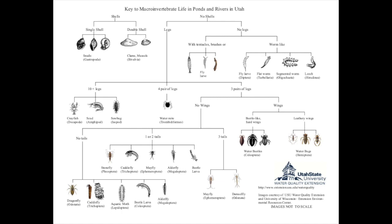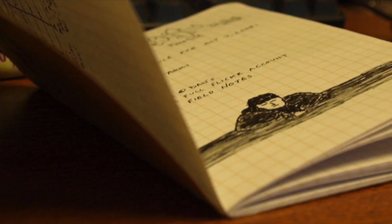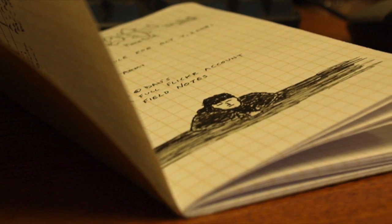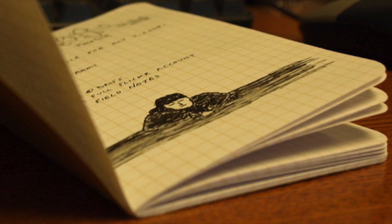If we look at the identification key provided on your screen, you'll see the first thing we look for is the presence of a shell. If the macro does have a shell, we determine if it's single or double. If the macro doesn't have a shell, we then look to see whether they have legs or not. We continue going through the decision tree in this process until we've identified the macro we've captured. Now that you know how to use the identification keys, let's put your skills to the test. Please pause the video now if you wish to gather a pencil and a piece of paper to write down your macro identification guesses.